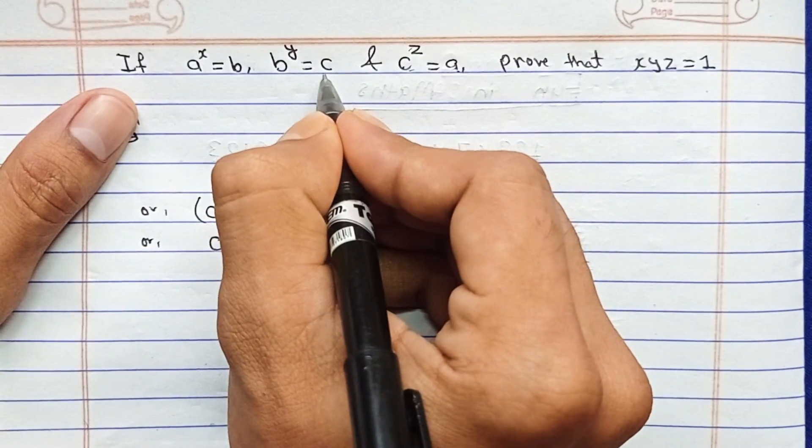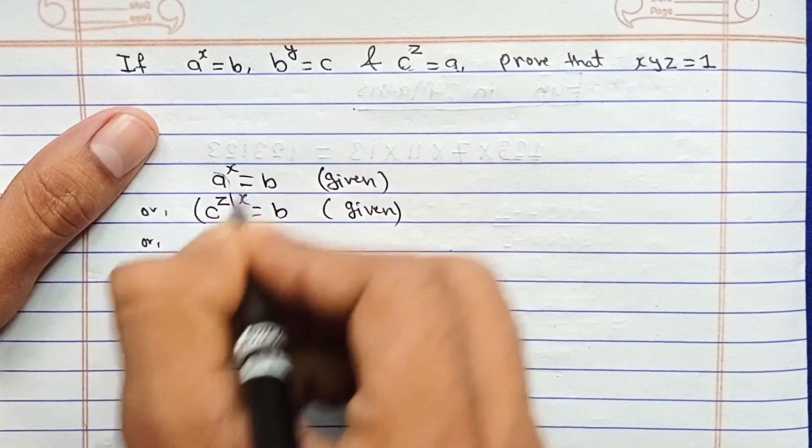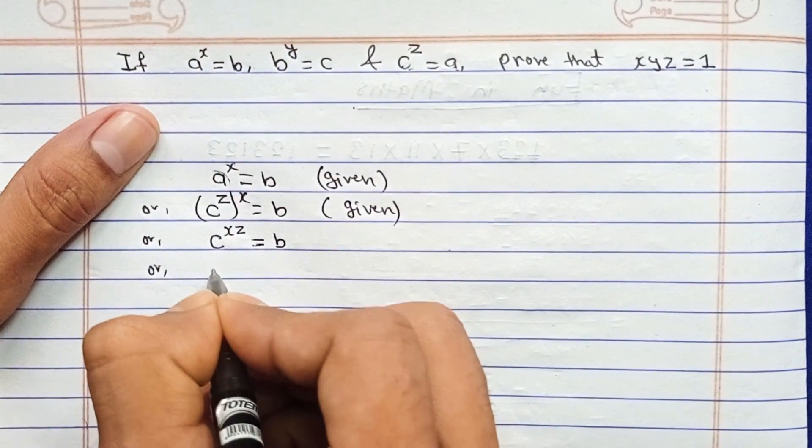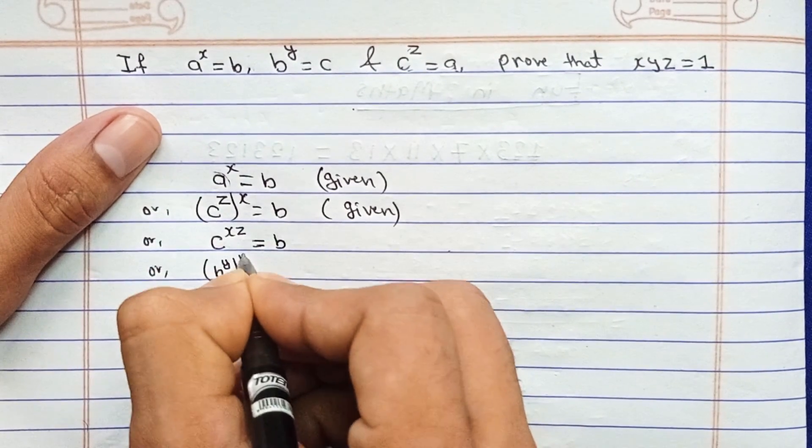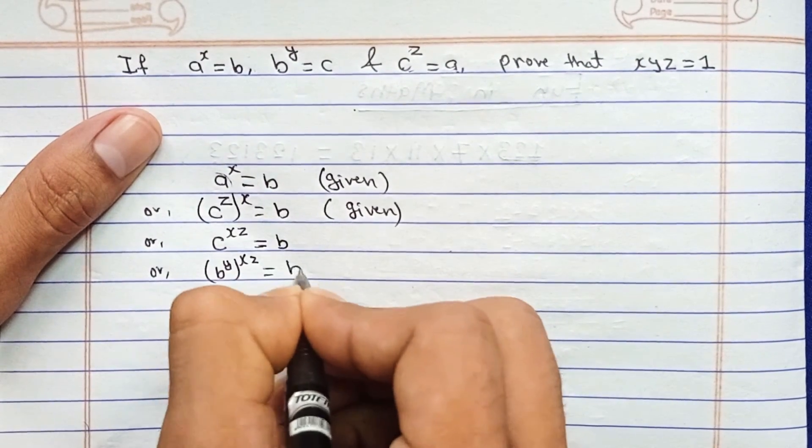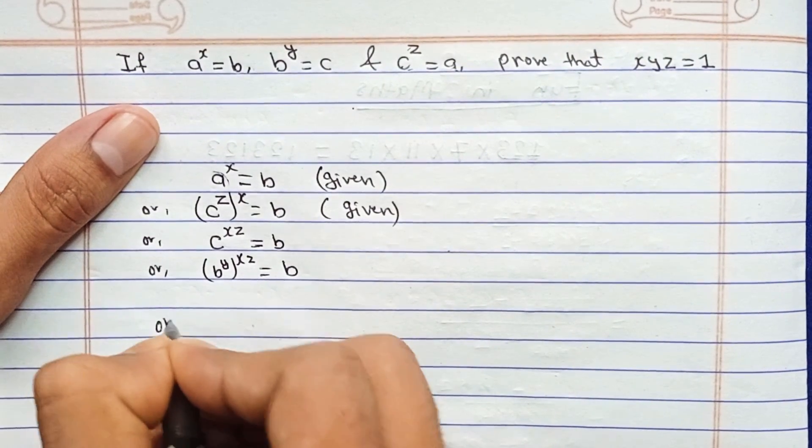In place of c you can see here, you can write b to the power y. So replace this c by b to the power y. Or in place of c, you can just write b to the power y to the power xz equals to b.